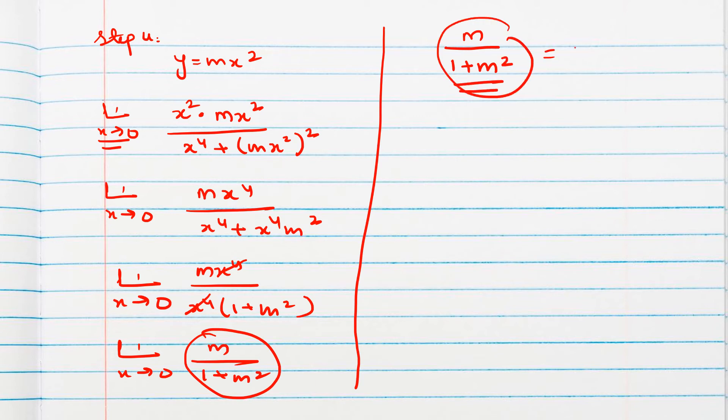So this is not equal to 0. For whatever value of m we will get different values of limit. That means we can say f1, f2, f3 are equal but not equal to f4. If this happens we will say limit does not exist. So whenever after two steps you get both are equal, check for the third step, then also equal, check for the fourth step. If it is equal you will say limit exists, otherwise limit does not exist.